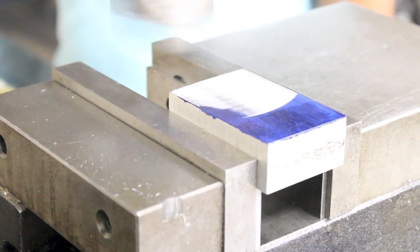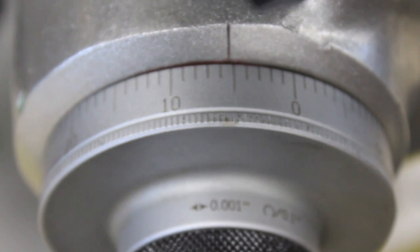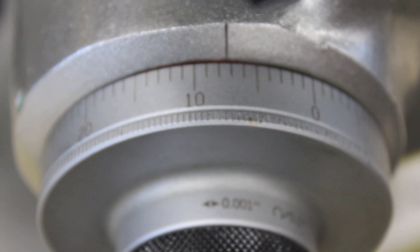Once the touch off has been made, zero the cutting tool with the graduated collar that is located on the handle that controls the movement of the table.